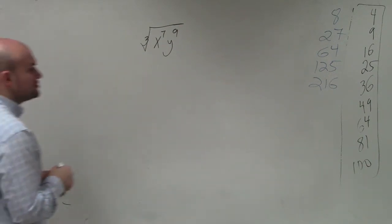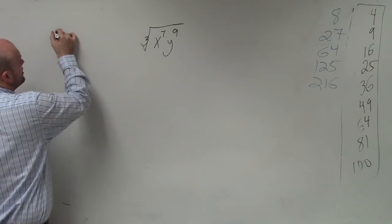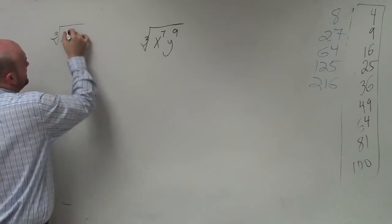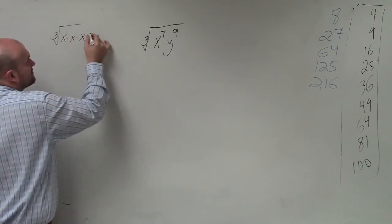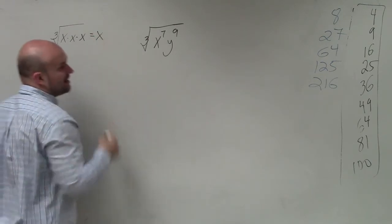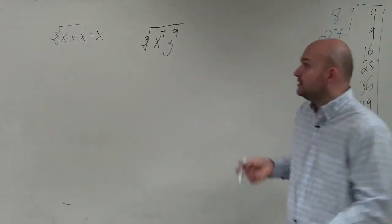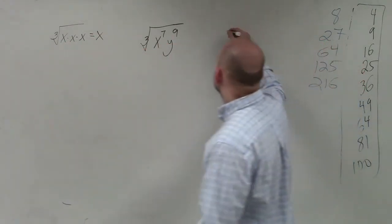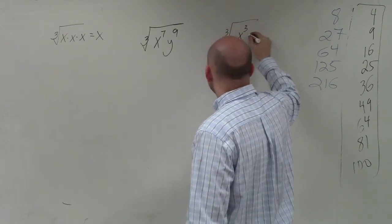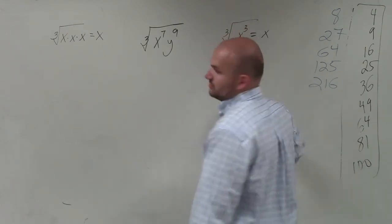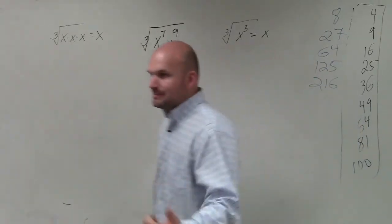So when we're looking at this, guys, there's two different ways you can do this, as I mentioned. You can look at it as knowing that the cube root of something multiplied by itself three times is just going to give you that value. Or you can look at it as the cube root of x to the third power — it's just going to be x. Either way, both of them are going to work.